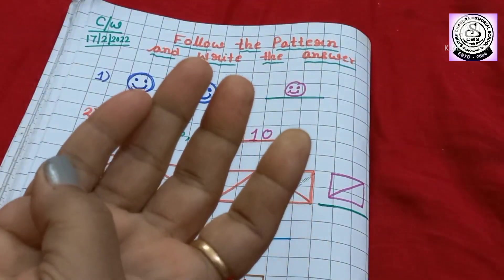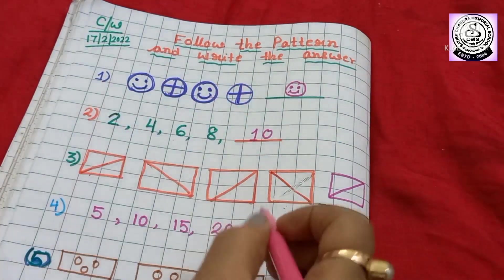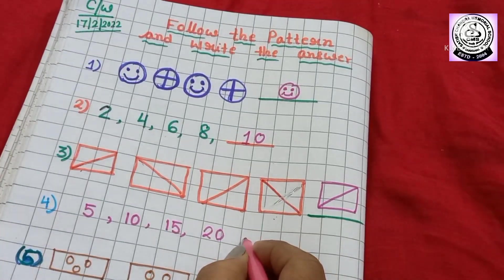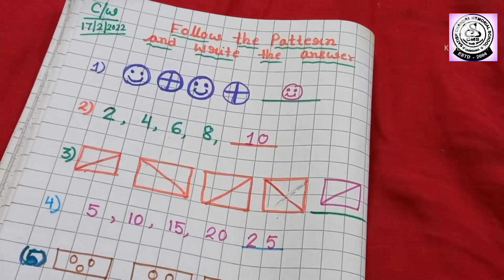After 20, 21, 22, 23, then 24. So, which number will come? Yes, 25. Here, you have to write 25.